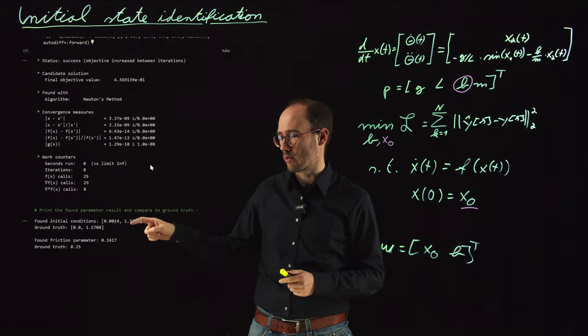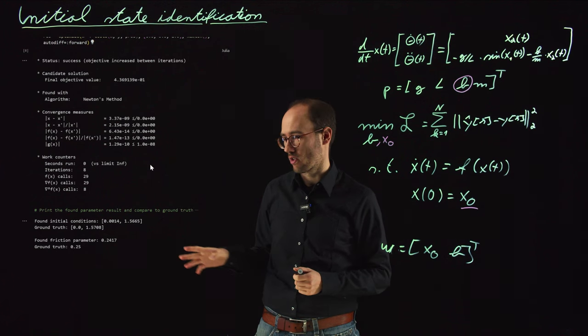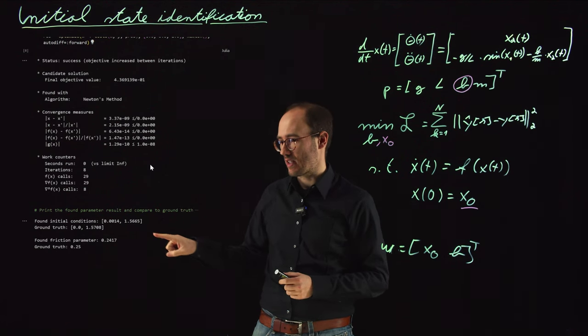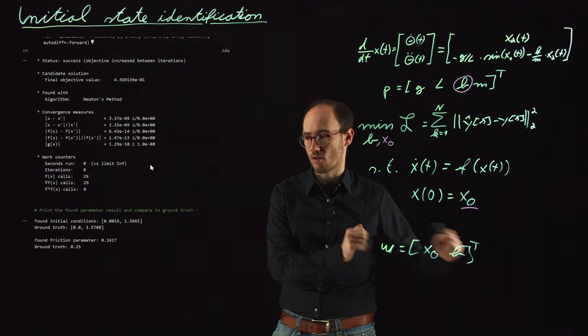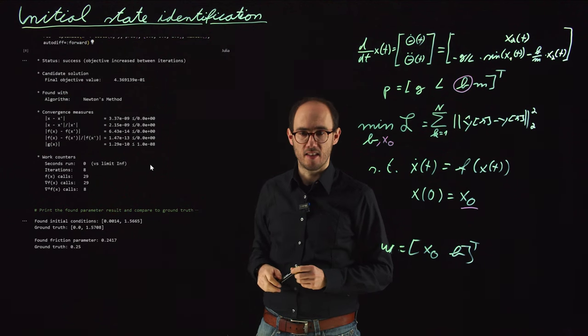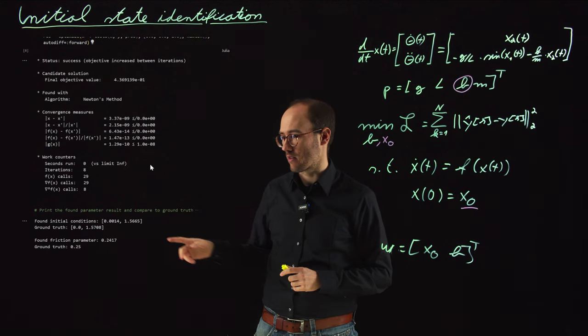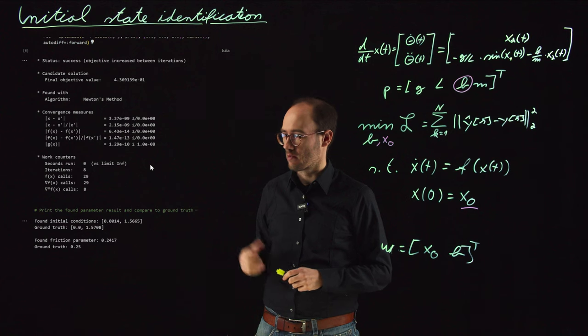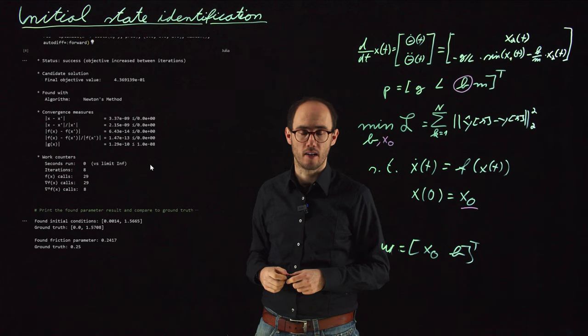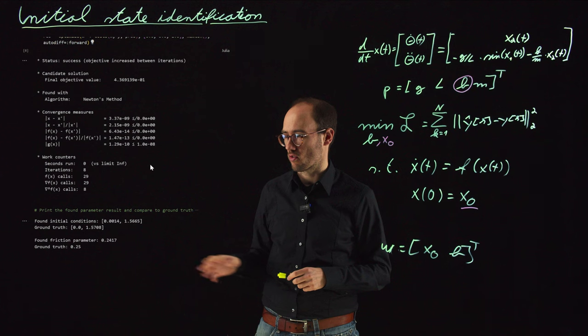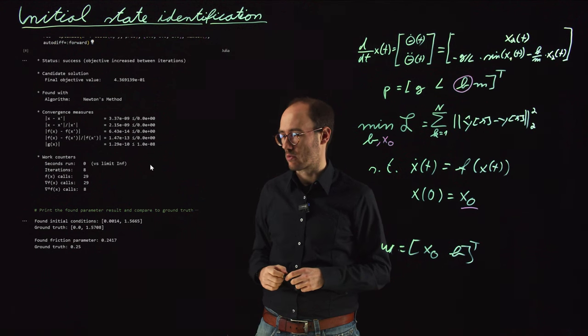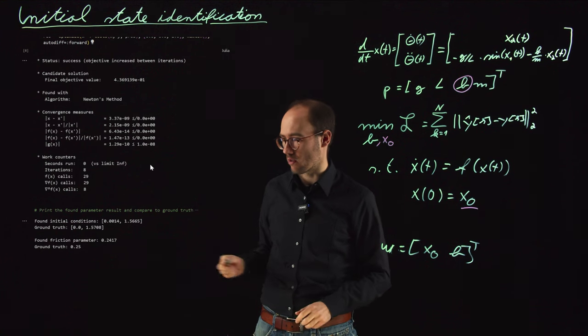And if we look at the outcome of that optimization which we can find here, so where we basically print the found initial condition and the friction parameter, we can basically see that still although we have extended our optimization problem in contrast to the previous task, this is still quite accurate. So the initial condition was except for some numerical error regarding the sensitivity of the optimization solver, we have been able to also retrieve this initial condition completely without any additional pre-knowledge and also the friction parameter as we can see here is still identified quite well.